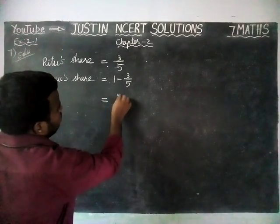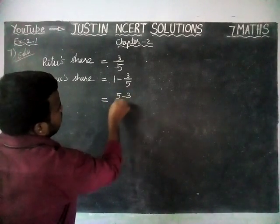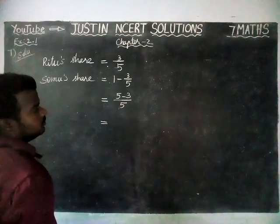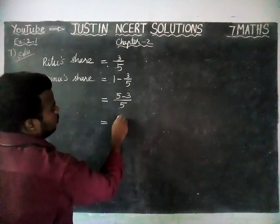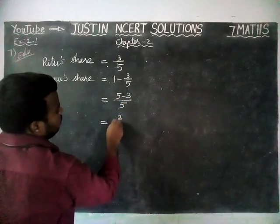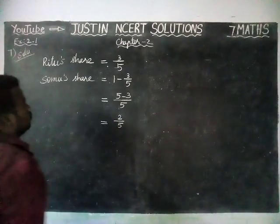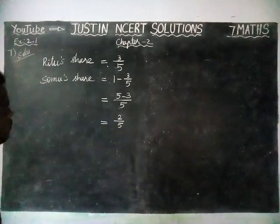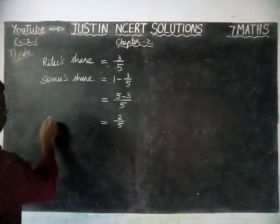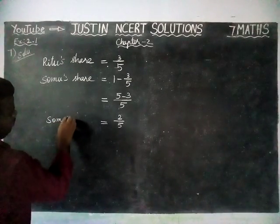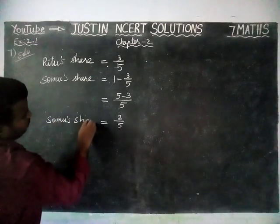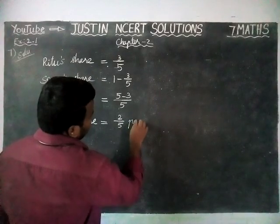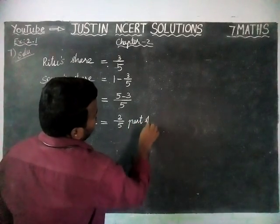From 1 minus 3/5, we have to convert this into like fractions. We are going to multiply 1 by 5/5. Now 5 minus 3 divided by 5 is equal to 5 minus 3, which is 2, divided by 5. So Sommu's share is equal to 2/5 part of an apple.